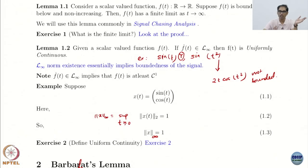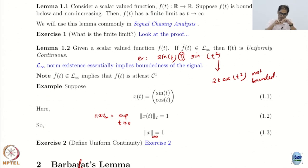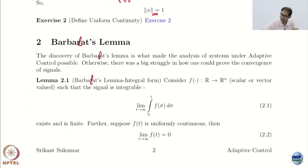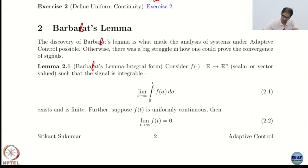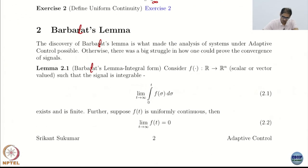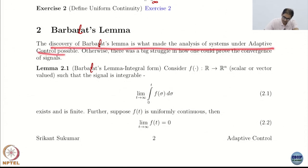We have seen the Barbalat Lemma — the two versions of it, one being a corollary of the other. We want to see how we can use it, so we are going to look at a very simple example. There is a nice aside which says that the discovery of Barbalat's Lemma is what made analysis of adaptive systems possible.